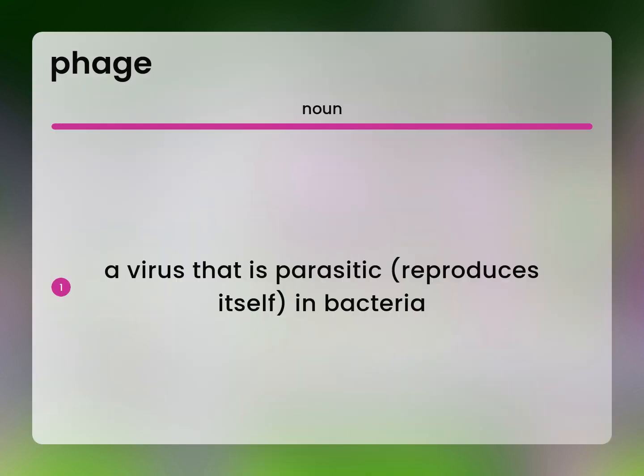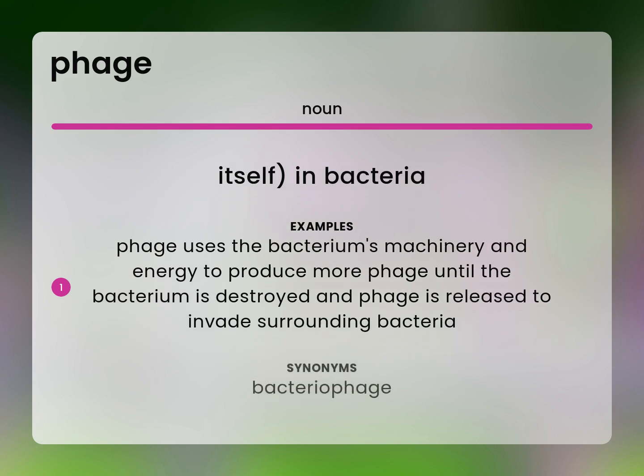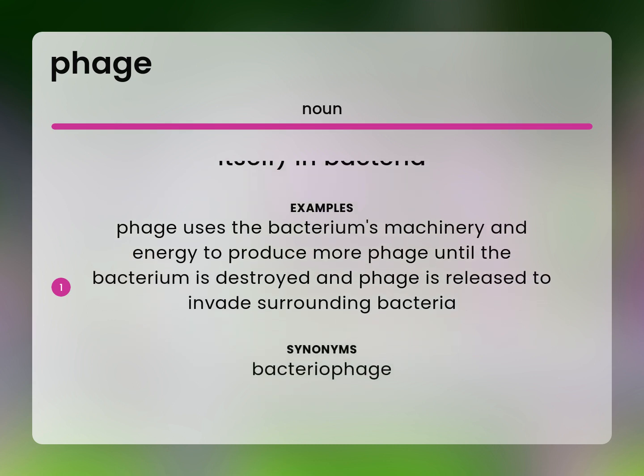A virus that is parasitic reproduces itself in bacteria. Phage uses the bacterium's machinery and energy to produce more phage until the bacterium is destroyed and phage is released to invade surrounding bacteria. Bacteriophage.